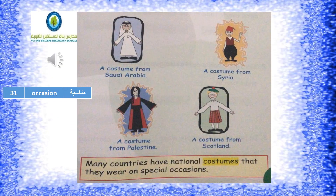Dear students, we have four pictures of national costumes from four countries. A costume from Saudi Arabia: he's wearing a headscarf because Saudi Arabia is quite hot. A costume from Syria: he's wearing something called in Arabic a tarbush. A costume from Palestine: she's wearing a dress with red stitches. A costume from Scotland: he's wearing a skirt. Many countries have national costumes worn on special occasions. Occasion means in Arabic munasabah.